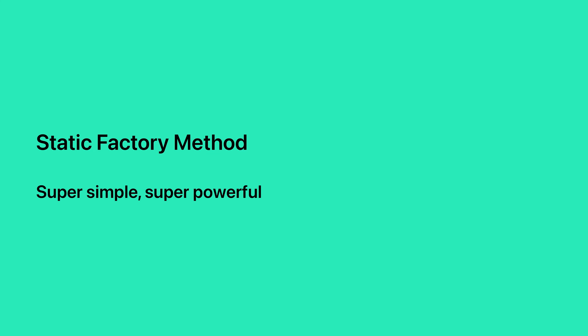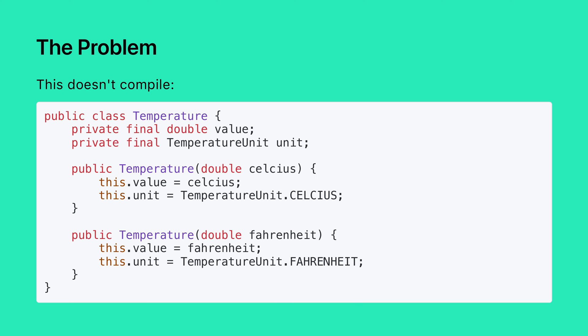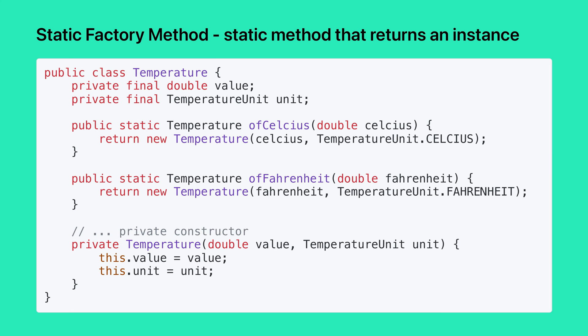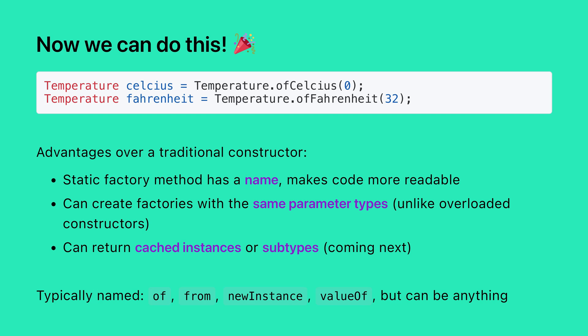Let's start with the static factory method, which is super simple but super powerful. The problem is that this doesn't compile. We want to create a temperature that's either in Celsius or Fahrenheit, but constructors won't let us do this. The static factory method lets us work around this limitation. We make the constructor private and create two static methods, ofCelsius and ofFahrenheit, that return instances of temperature.